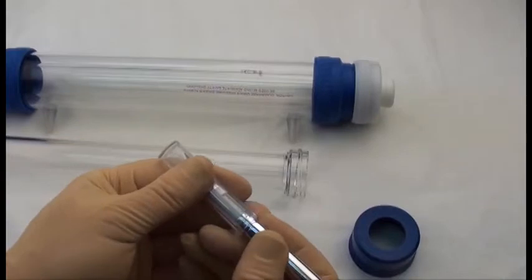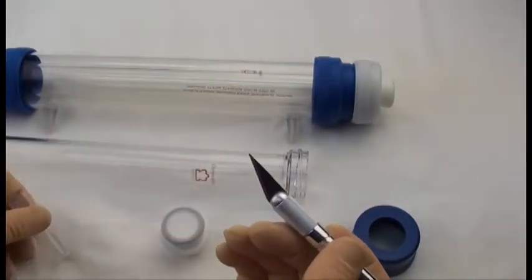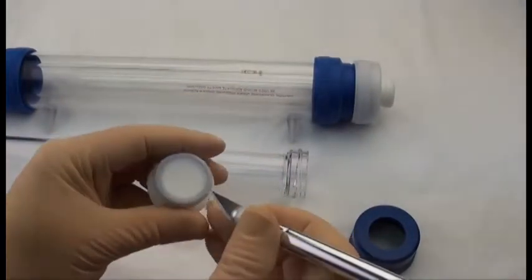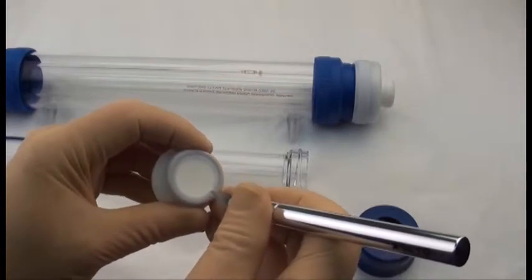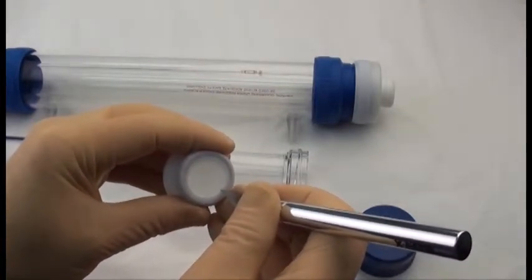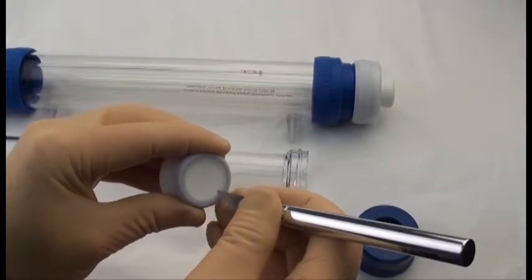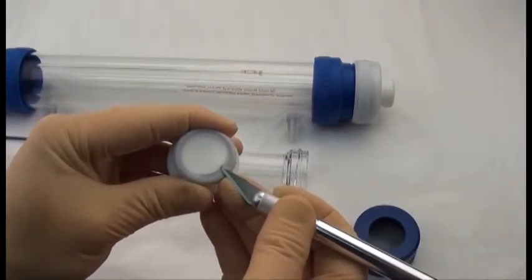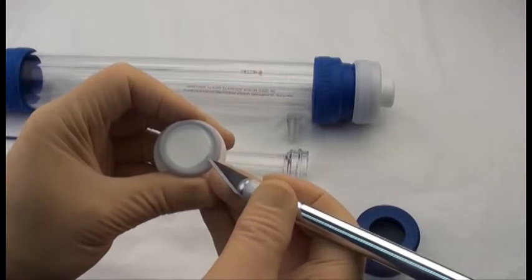So to remove it, take the X-Acto knife and very carefully place it right at the edge of the HDPE bed support, and just pry up the bed support.